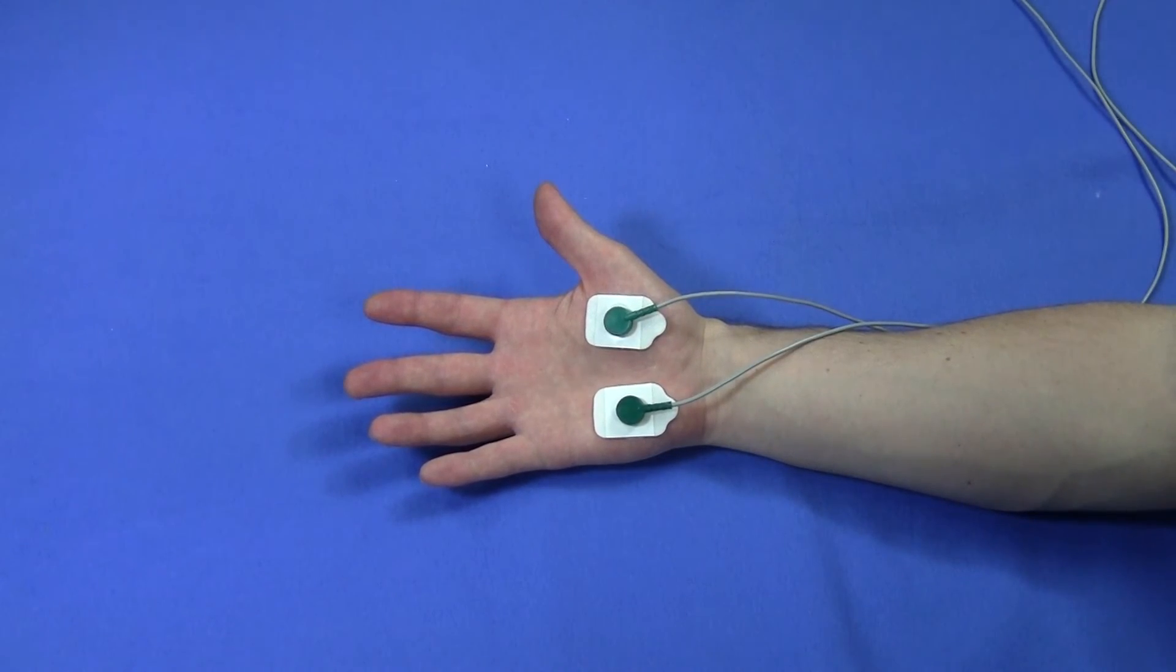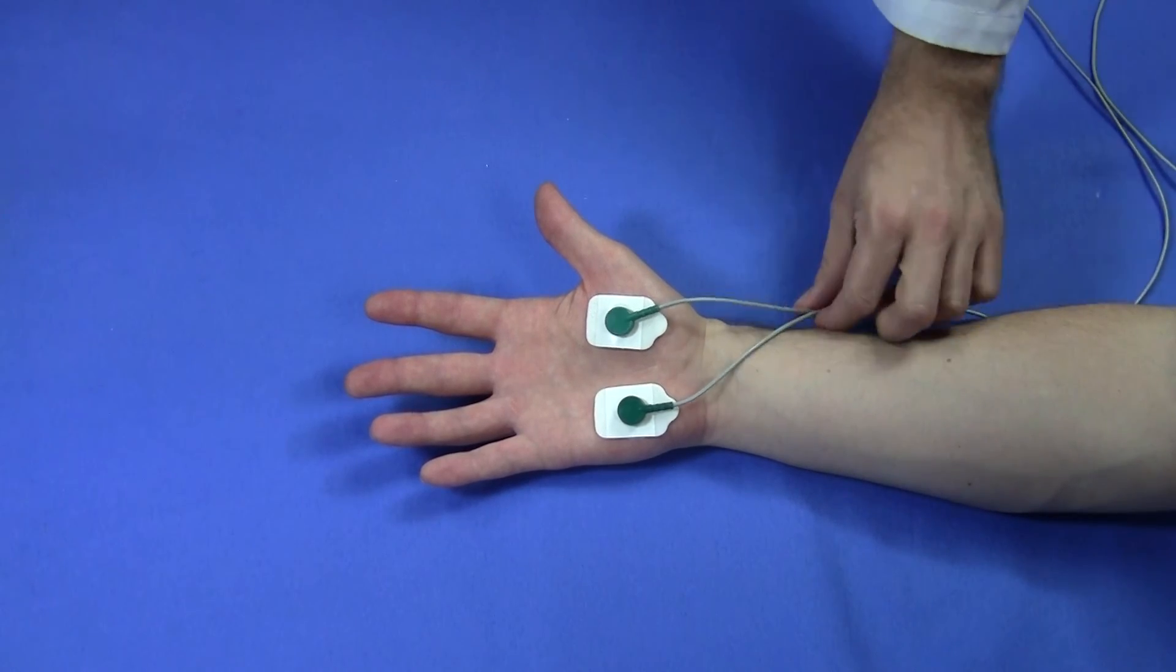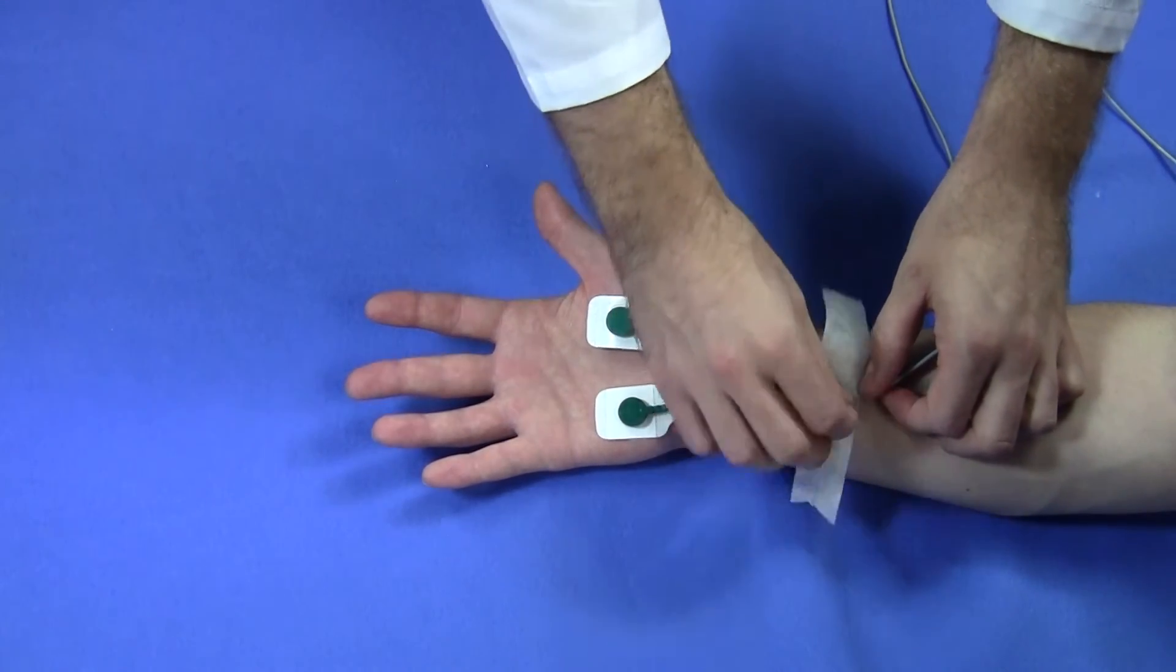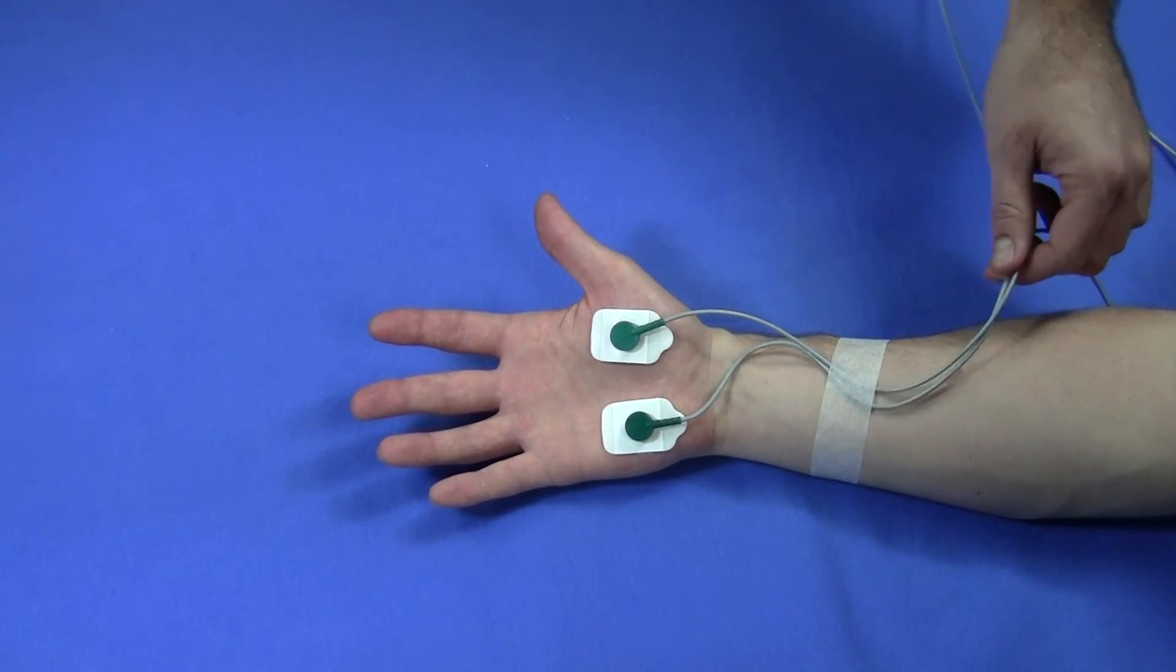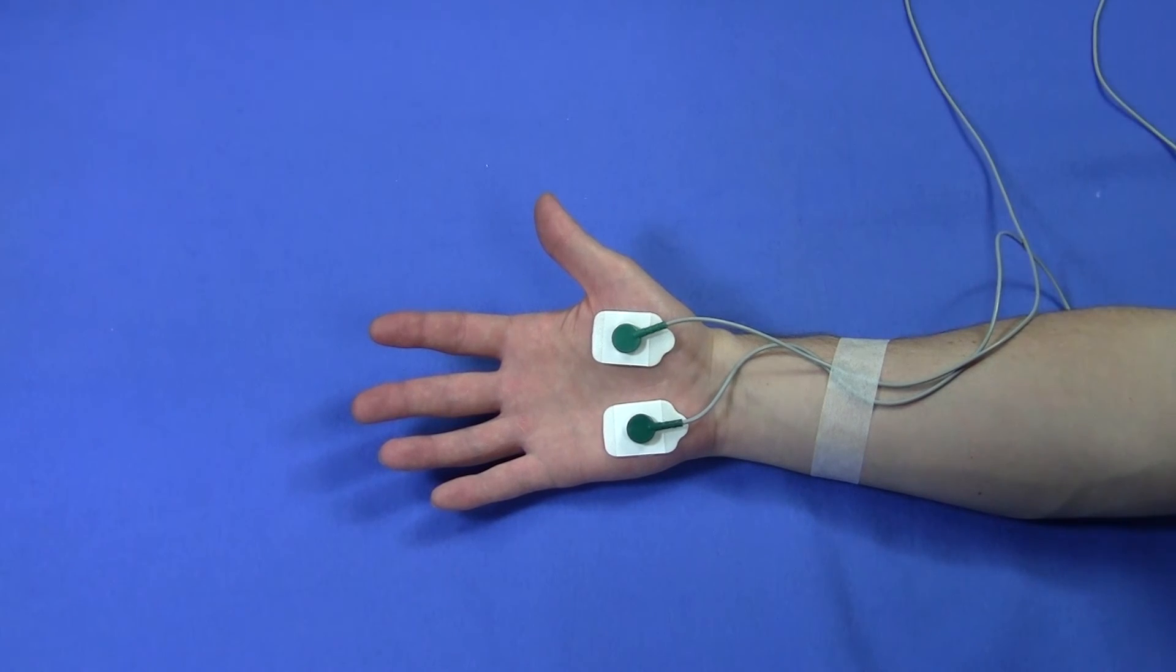Next, I'll take a piece of micropore tape and make a service loop by attaching the lead wires to the subject's wrist. This way, when there's tension on the lead wires, it's applied to the tape and not to the electrodes themselves.